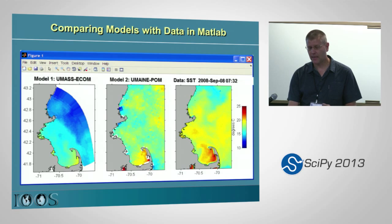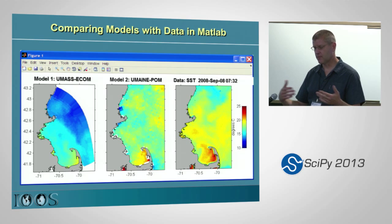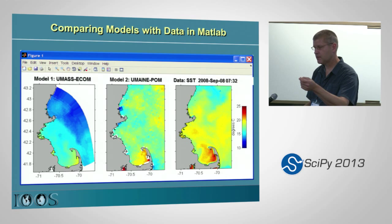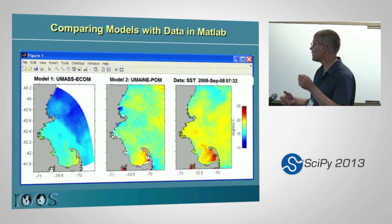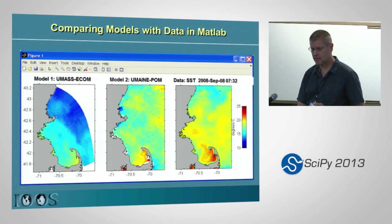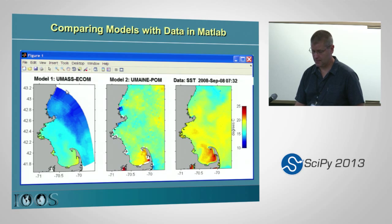In MATLAB — Alex Crosby, who you heard from yesterday, did a lot of the work on this — you can just point at a URL, give it a variable name, and you get back two objects: one is the 3D data structure of the data, and the other is a geo object containing latitude, longitude, Z, and time. It's like the MATLAB version of what Phil just talked about — a way to unambiguously determine all the coordinate variables and get back this object. It works the same way across all these different models because they meet the CF conventions. In the MATLAB toolbox you can compare different model results using the very same routine.